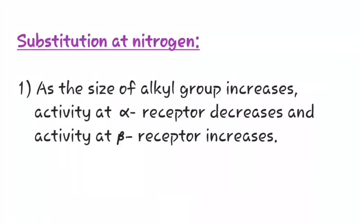Now, let us see the substitution at the nitrogen. The receptor selectivity is dependent upon the size of alkyl group present at the nitrogen. As the size of the alkyl group increases, the activity at alpha receptor decreases and activity at beta receptor increases.